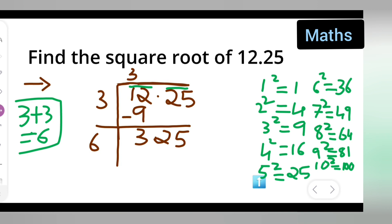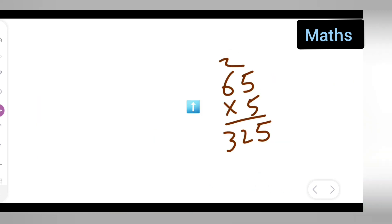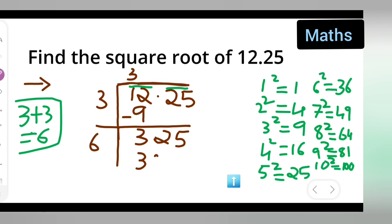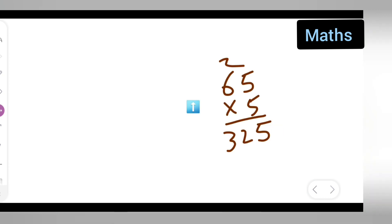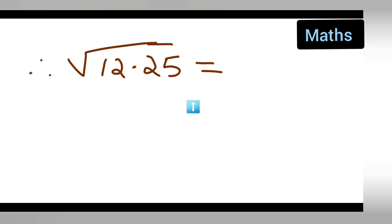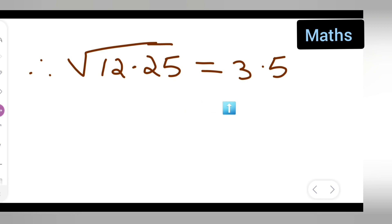Your answer from the division is 3 and 5, and the remainder is 0. You'll have to put the decimal point here, so the answer is 3.5. Therefore, the square root of 12.25 is equal to 3.5. I hope you have understood how to find the square root of 12.25. Thanks for watching.